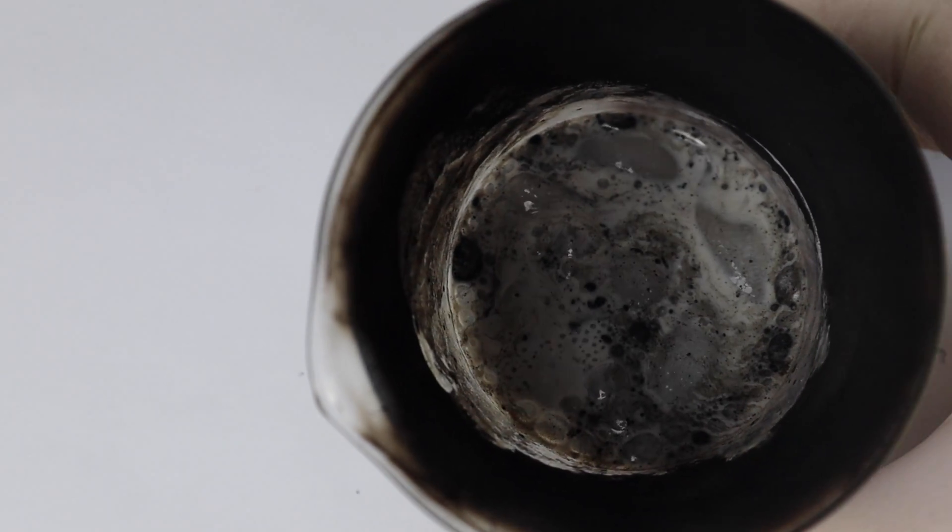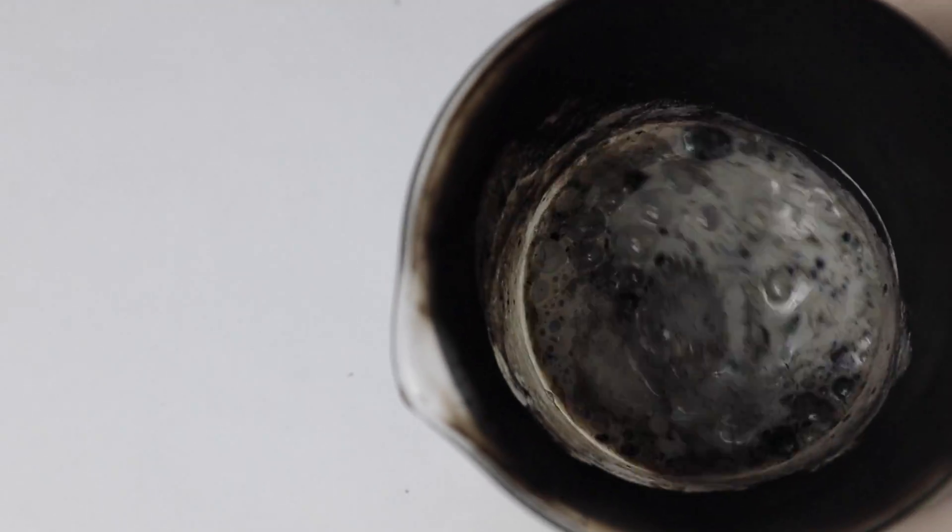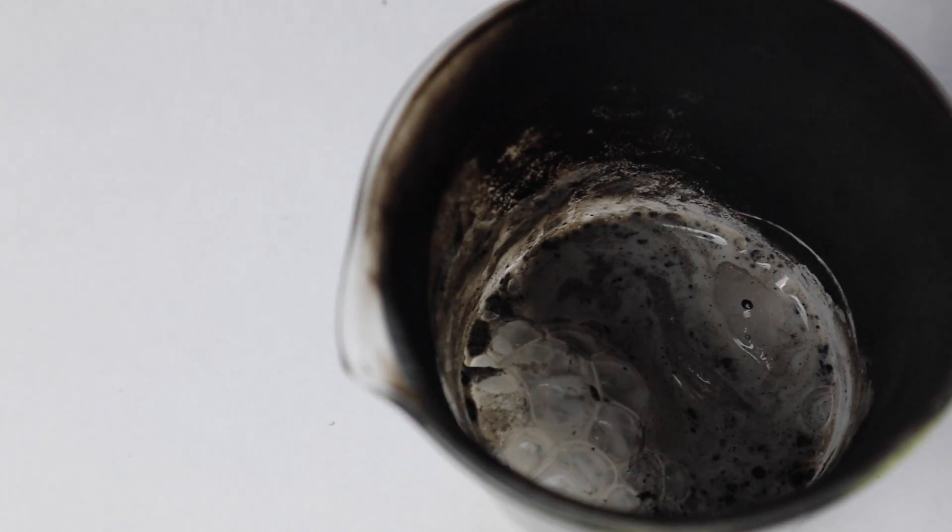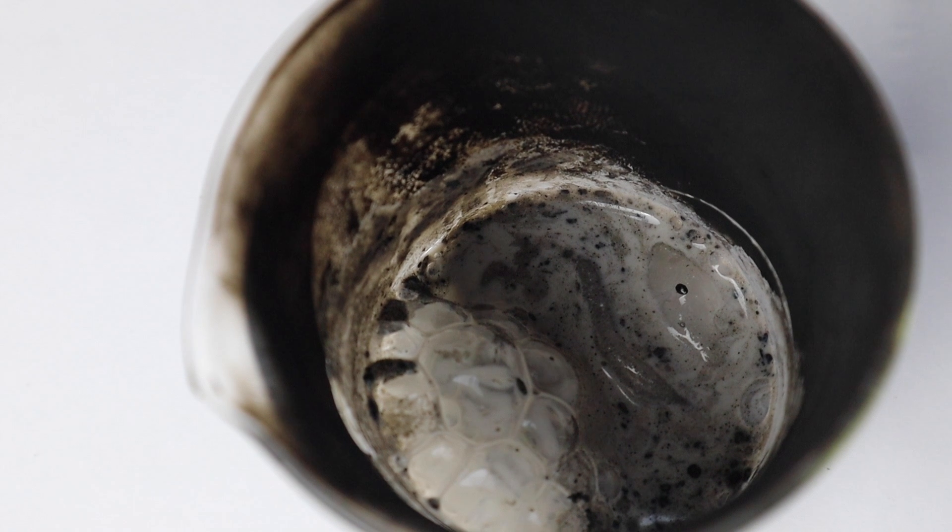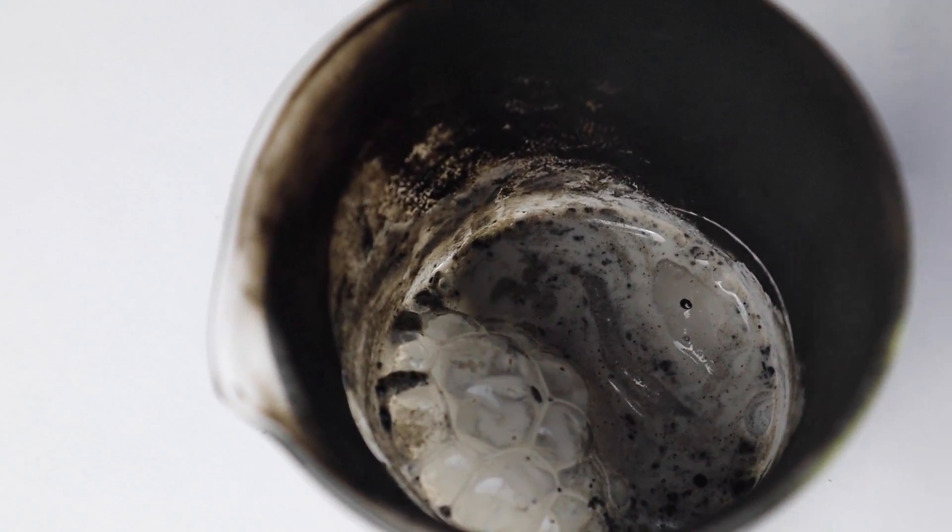What we're left with is a very basic solution of water, calcium hydroxide, as well as soot. Calcium hydroxide has a very high pH and is sometimes used in fertilizers to reduce the acidity in soil.